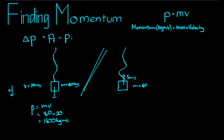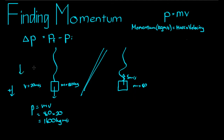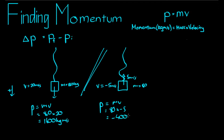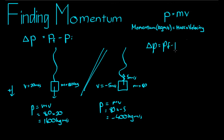Always work in metres per second and kilograms to find the correct momentum. On the way up, since we've taken downward as positive, the velocity of the person in the second picture is actually negative five metres per second. So the momentum in this picture is p equals mv, eighty times negative five, or negative four hundred kilograms times metres per second. To find the change in momentum: delta p equals pf minus pi, that's negative four hundred take away sixteen hundred, which equals negative two thousand kilograms times metres per second.